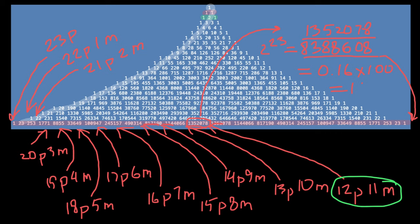Some of you may feel these calculations took long, but actually all you need to do is find Pascal's triangle, go to row 23, find the probability of 12 paternal and 11 maternal combinations, and divide by the total number of combinations. That's all for today — thank you for your attention. Please subscribe for my new videos, which I post almost every day. See you in the next video. Goodbye.